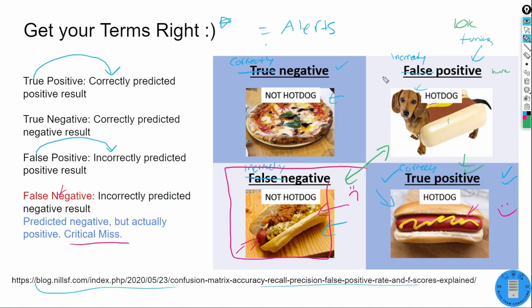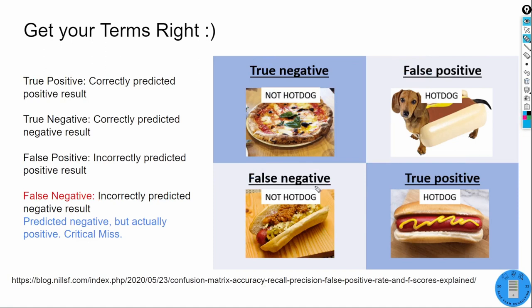It's a constant balance — organizations don't want so many false positives that SOC analysts are tuning 10,000 alerts per day, but you also accept some risk. Realistically, maybe 90% of alerts are false positives, about 9% are true positives, and you miss around 1% — though probably more. To assess your false negative rate, have someone pen test your org, run purple team exercises combining red and blue teams, and test for known malware and MITRE ATT&CK techniques.